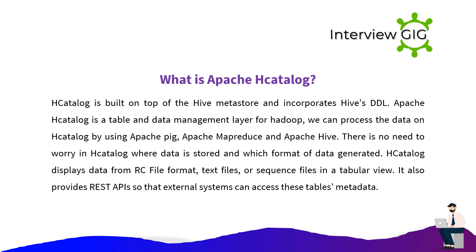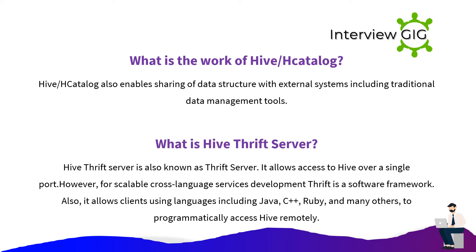What is Apache HCatalog? HCatalog is built on top of the Hive Metastore and incorporates Hive's DDL. Apache HCatalog is a table and data management layer for Hadoop. We can process the data in HCatalog by using Apache Pig, Apache MapReduce, and Apache Hive. There is no need to worry about where data is stored or which format the data is generated in. HCatalog displays data from RC file format, text files, or sequence files in a tabular view. It also provides REST APIs so that external systems can access these tables' metadata. Hive HCatalog also enables sharing of data structures with external systems including traditional data management tools.